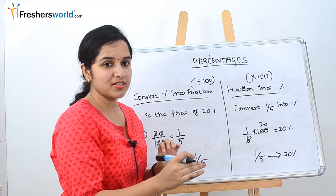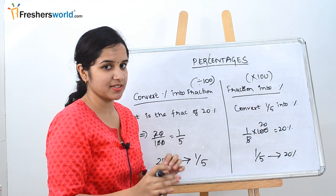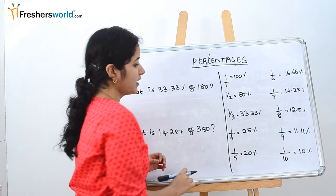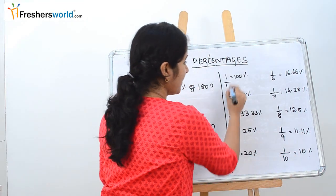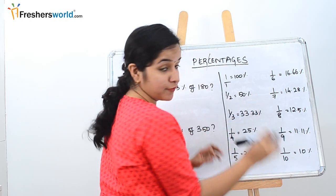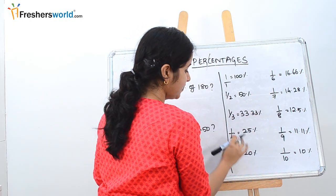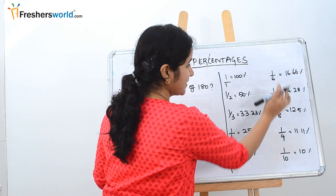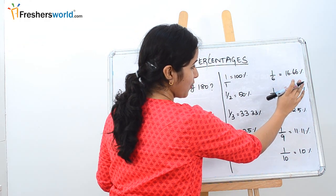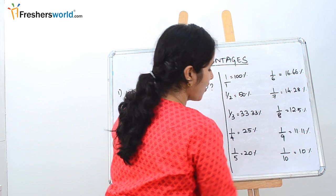These are the basic concepts you should know before solving percentage problems. The second part is that you should memorize fractions from 1 by 1 to 1 by 10. So: 1 by 1 is 100%, 1 by 2 is 50%, 1 by 3 is 33.33%, 1 by 4 is 25%, 1 by 5 is 20%, 1 by 6 is 16.66%, 1 by 7 is 14.28%, and so on till 1 by 10.